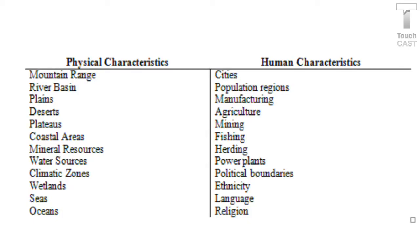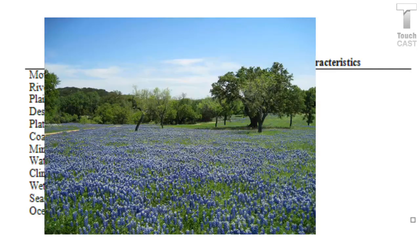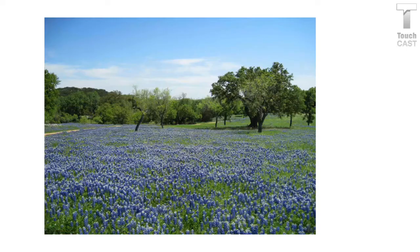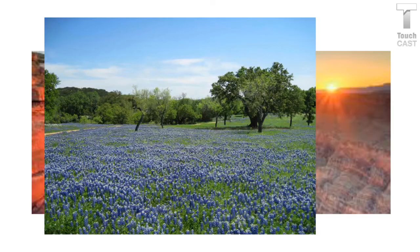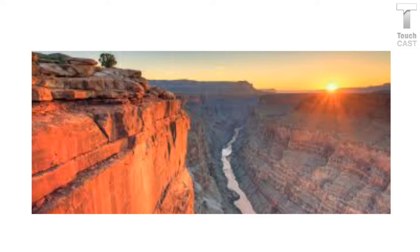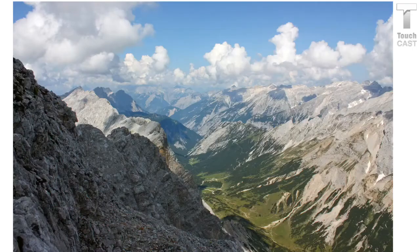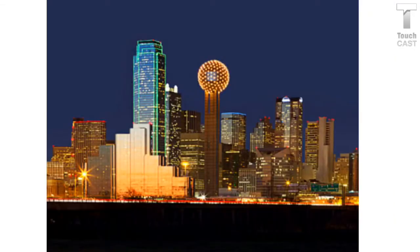Political boundaries means things like your state line. Now let's look at some examples. Is this image human or physical? This is a physical characteristic. What about this one — human or physical? Physical. What about this one? Physical. And this one — human or physical? This one is human because these are buildings that are man-made.